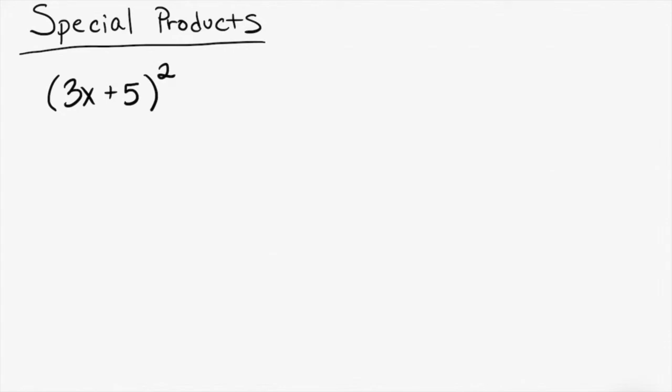We're going to continue to multiply polynomials today, but we're going to multiply some special polynomials. One example of a special product is this one, which is a polynomial squared. I'm going to show you the mistake that everybody's going to make at least one time. This would be wrong.